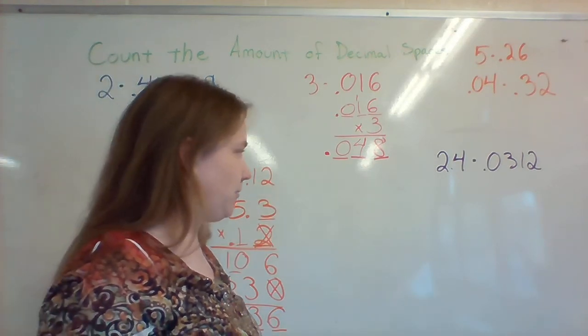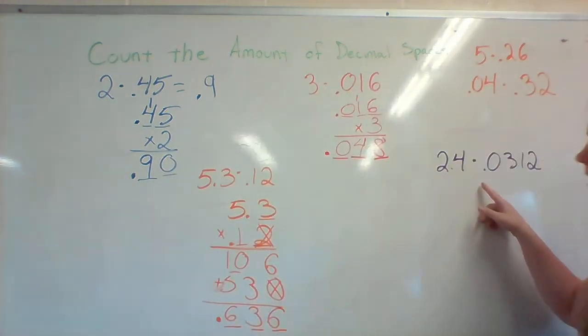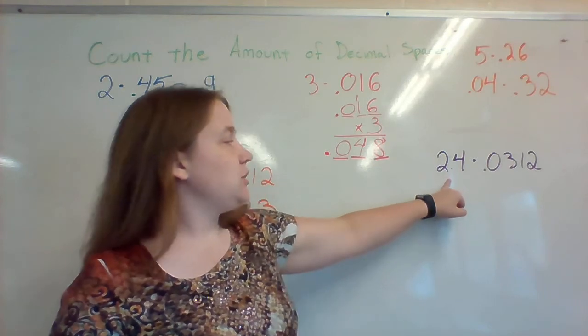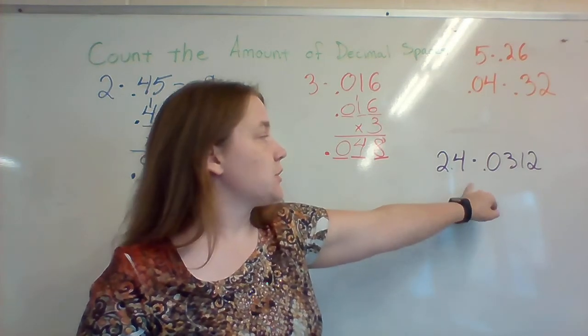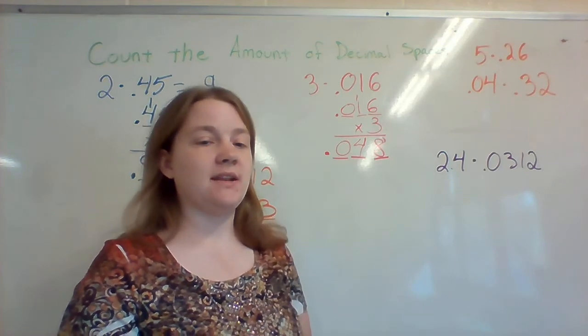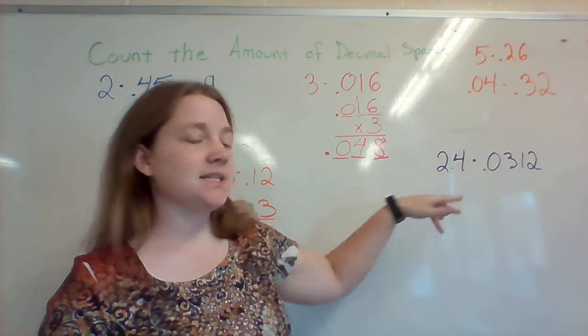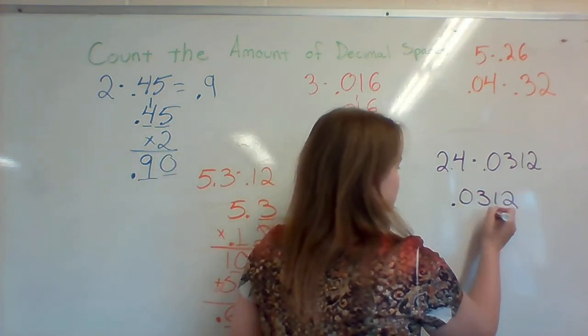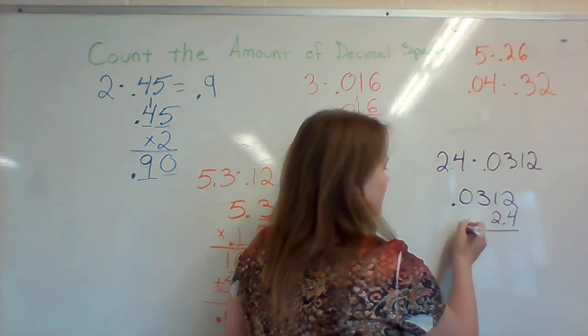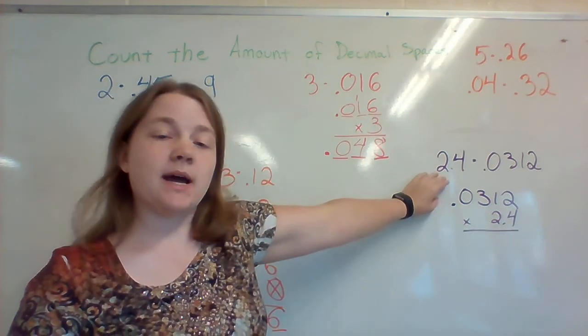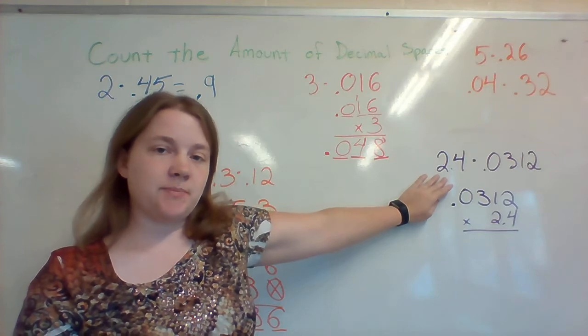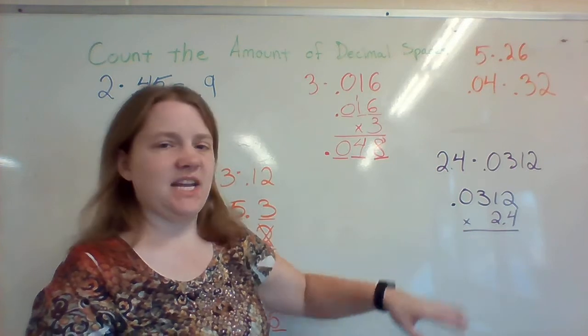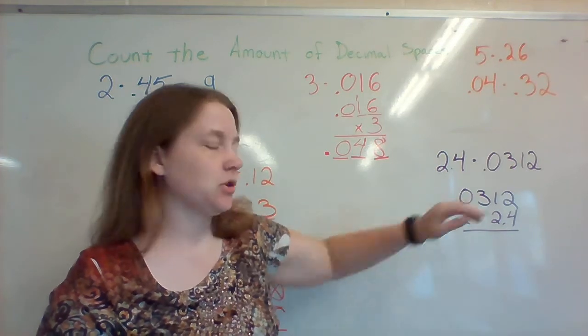Let's take a look at one more example. We have 2 and 4 tenths times 312 ten thousandths. So let's go ahead and set this up. And I know that I keep putting the longer number up top. You are not wrong if you put the shorter number up top, it's just going to result in a lot more levels for you to add at the bottom. And I like to have less things to do when I'm finished, so I put the longer number up top.